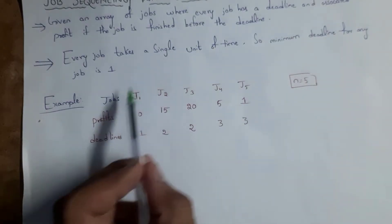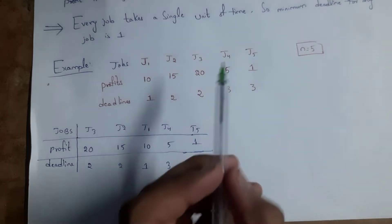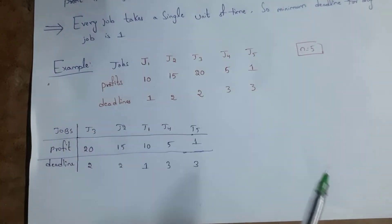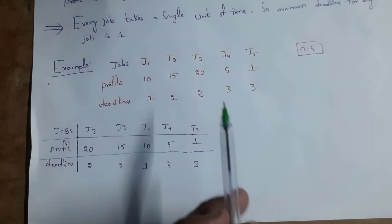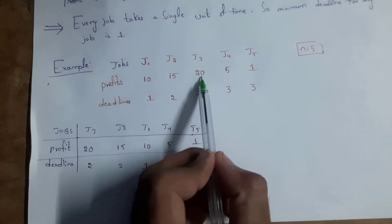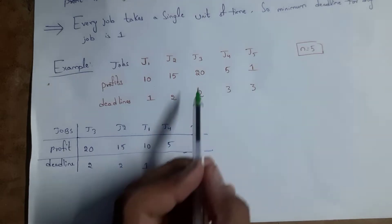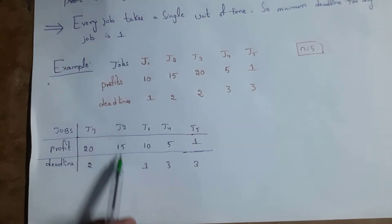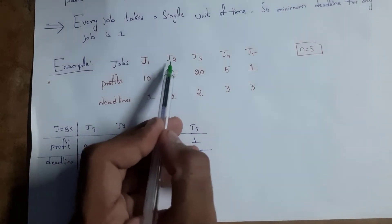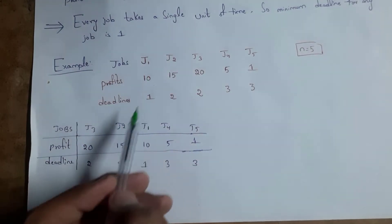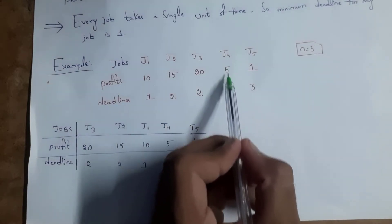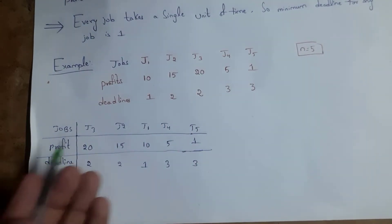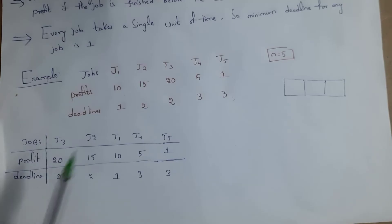In Step 1, we arrange the jobs in decreasing order of profit. Among all jobs, the highest profit is J3 with profit 20, so I list J3 first. After J3, the next highest is J2 with profit 15. Then J1 with profit 10, then J4 with profit 5, and finally J5 with profit 1.